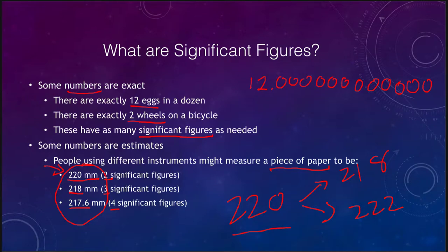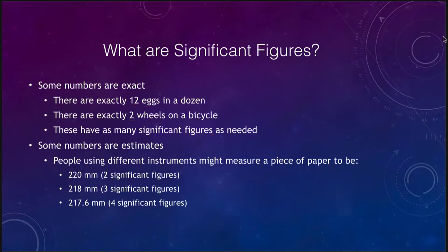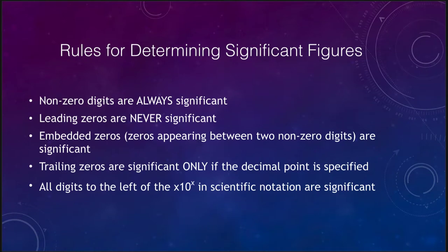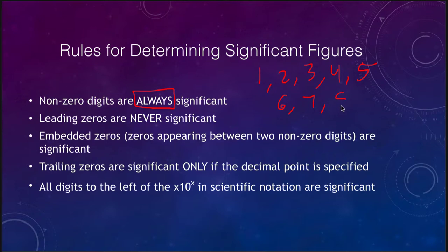So it makes a difference when we are doing our calculations how many figures we leave in that answer. Let's look at the rules for determining significant figures. The first rule is that any non-zero digit is always significant — it does not matter what it is, 1 through 9. If it is not zero, it is always a significant digit.